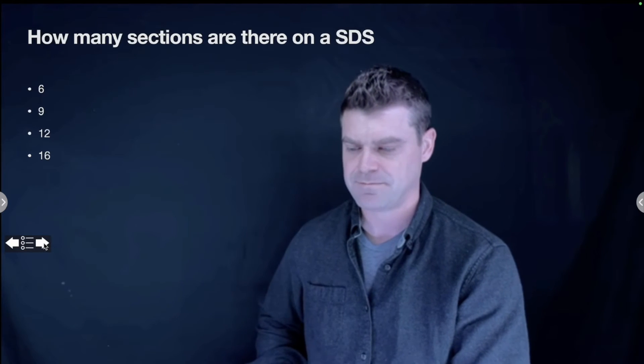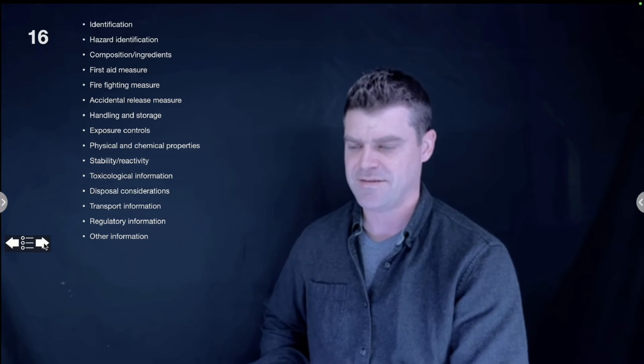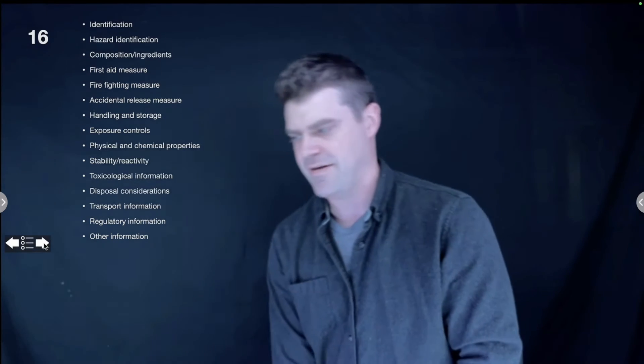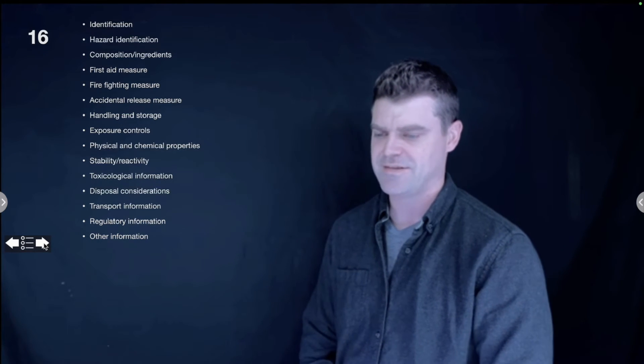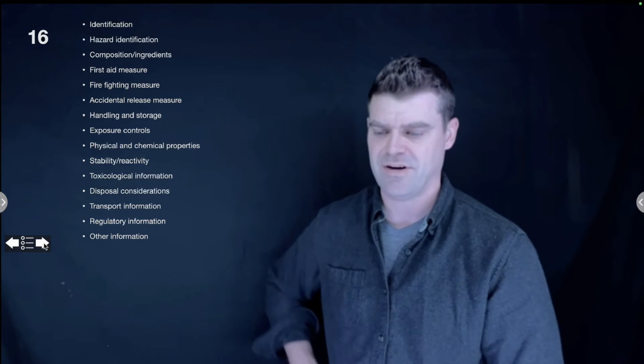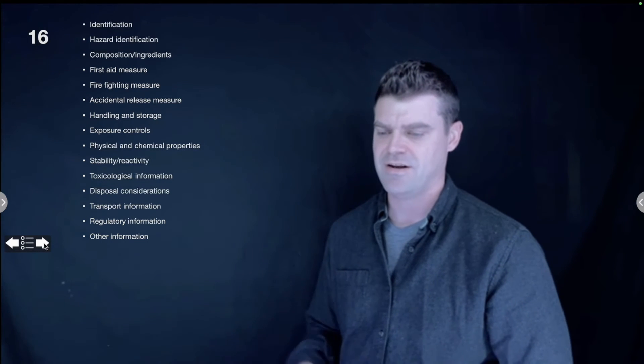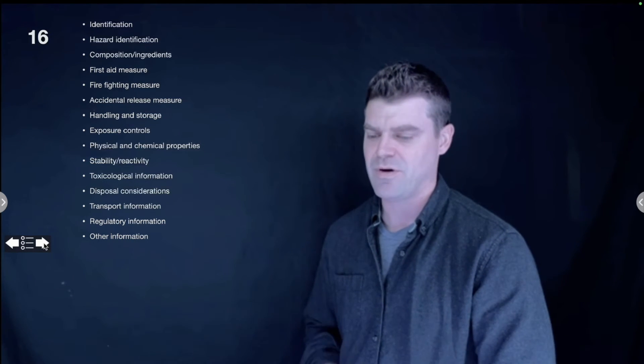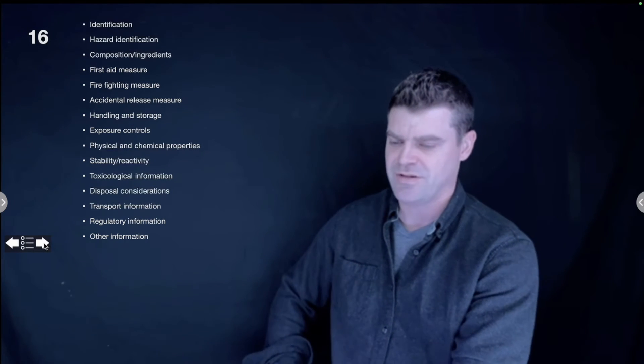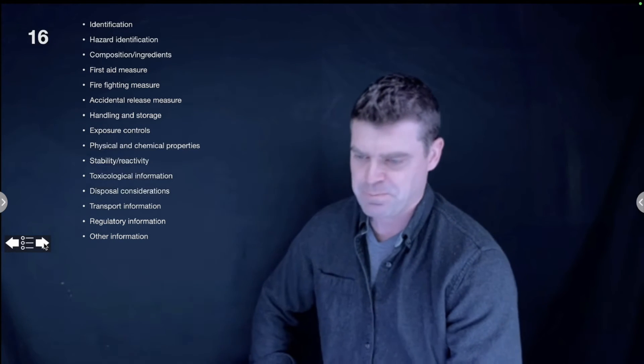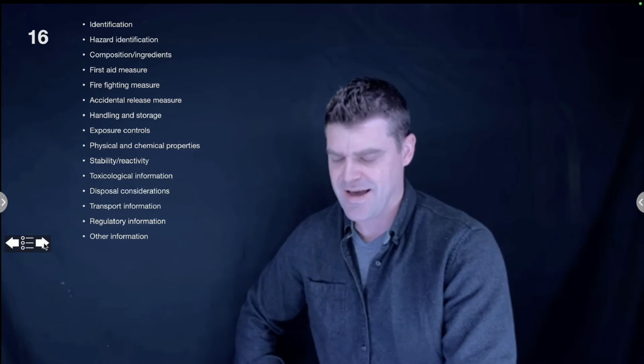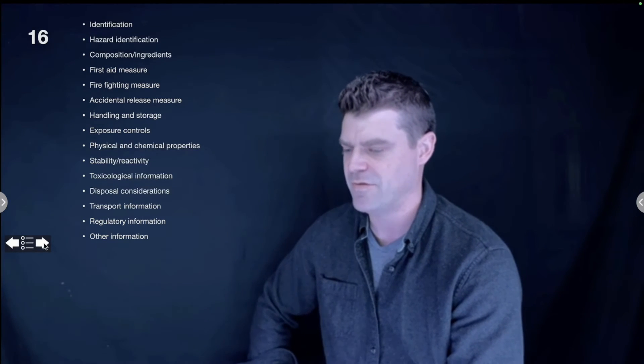How many sections are there on an SDS? 6, 9, 12, or 16? There are 16 sections on an SDS form. The UN standardized this. There used to be a system where all the different manufacturers or suppliers would have varying different numbers of categories on their SDS, and every time you pulled up one in an emergency, you'd have to filter through and try to figure it out. Now they've standardized it to 16. Those 16 are: identification, hazard identification, composition, first aid measure, firefighting, accidental release measure, handling and storage, exposure controls, physical and chemical properties, stability, reactivity, toxicological information, disposal consideration, transport information, regulatory information, and other information. I don't think that you need to necessarily remember all of those, just know that there are 16 and that it's all standardized for ease of reference in an emergency.